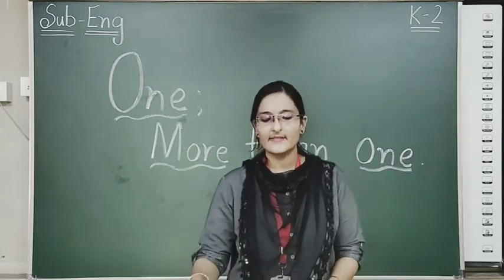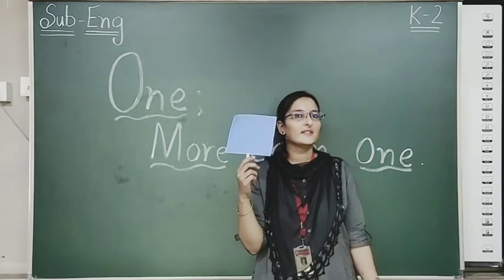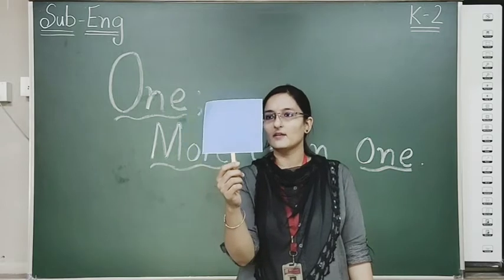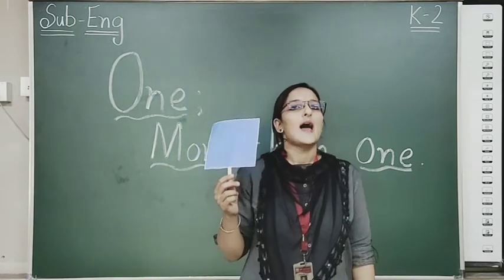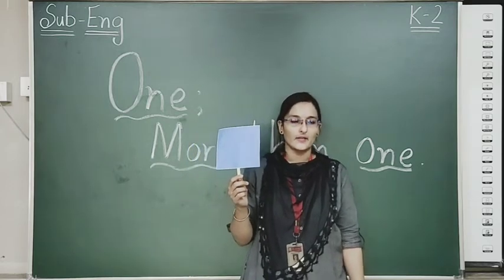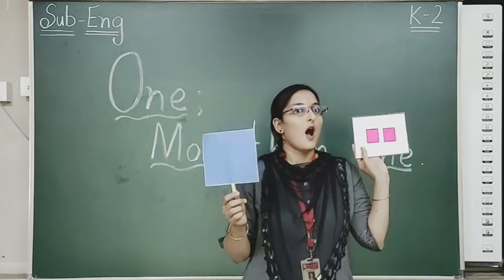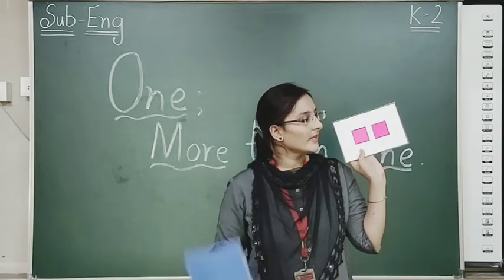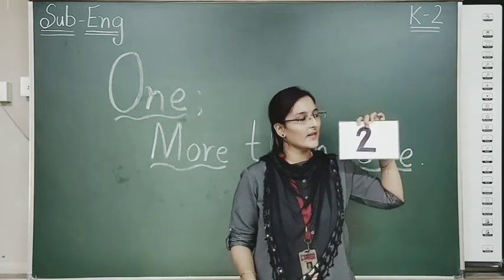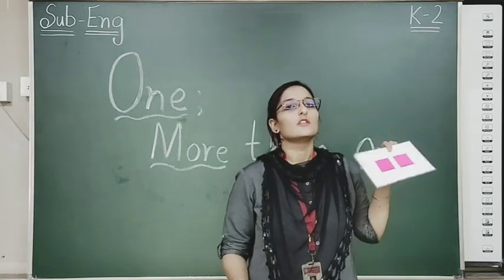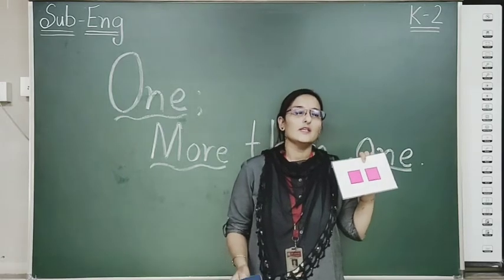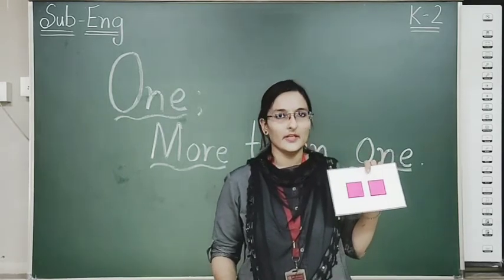Moving to our next example. What is this? Square. Only one. So the spelling will be S-Q-U-A-R-E. Now look here. How many squares are there? Count it. One, two — two. So the spelling will become S-Q-U-A-R-E-S. Squares. Got it.